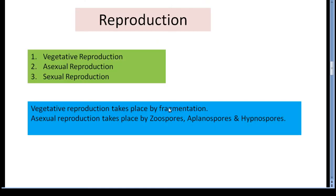Reproduction takes place by three methods: vegetative reproduction, asexual reproduction and sexual reproduction. Vegetative reproduction takes place by fragmentation. The thallus can break into small fragments due to mechanical injury or insect bite. The broken fragments develop a thick wall and later develop into a new Vaucheria thallus.